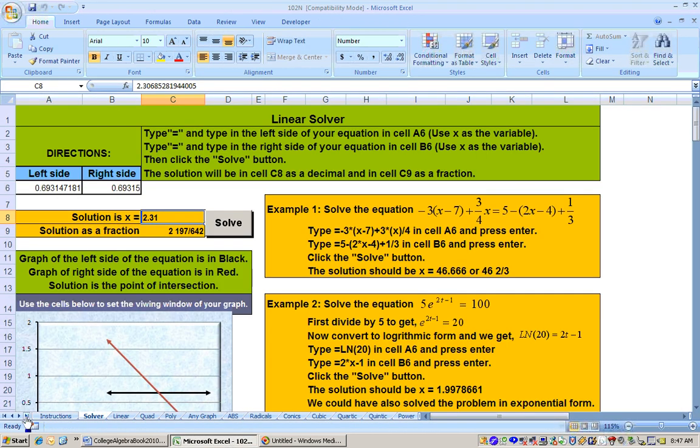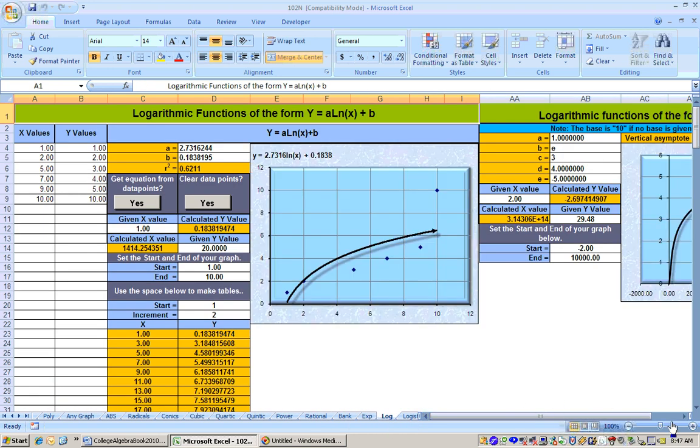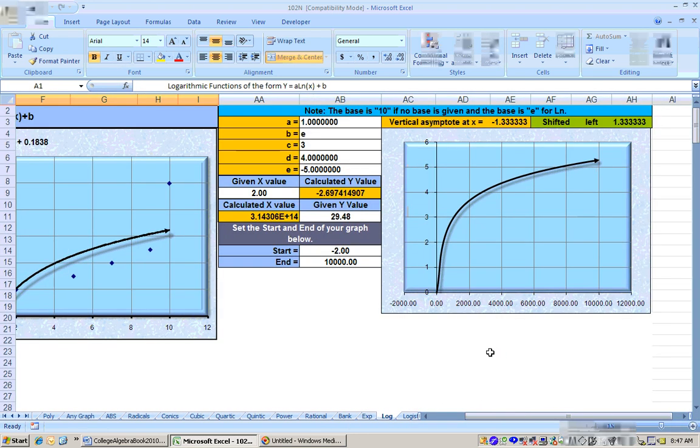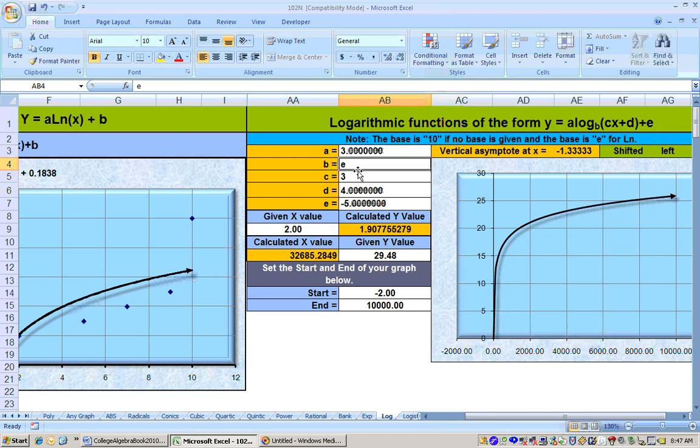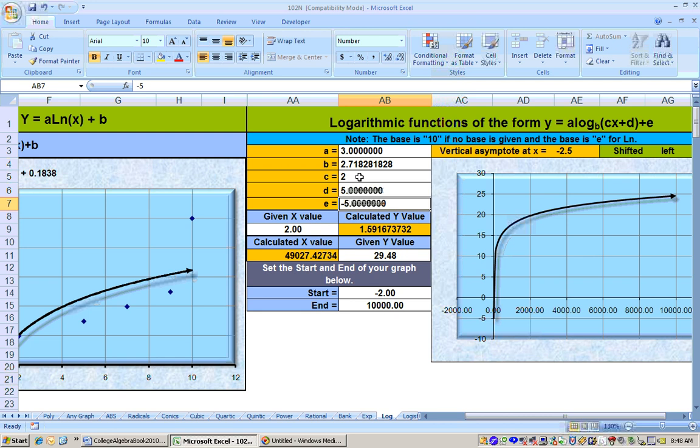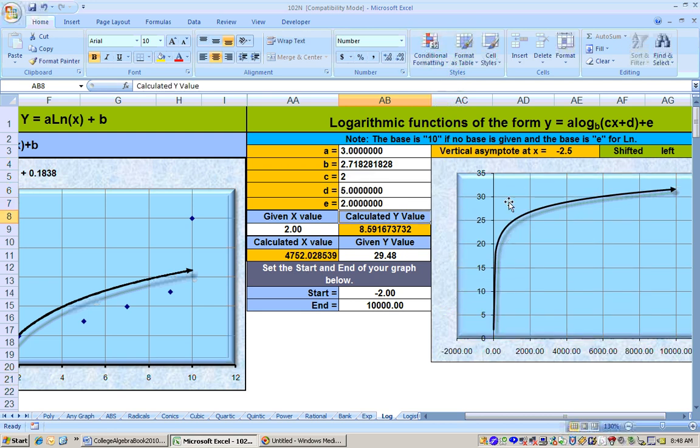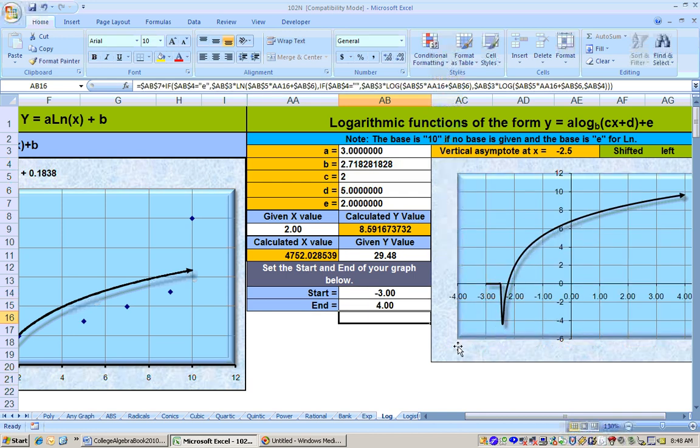You could always graph it on the logarithmic sheet up in this area. On the right-hand side of the sheet is where you could graph it. And we would be putting in, to this problem, the a is 3. The b, the base, would be e. And we could leave the e there or do equals exp 1 for e. And it'll put that number in there for us. The c is 2. The d is 5. And the e was 2. And there's the graph. Where's the vertical asymptote at negative 2.5? And we could graph this thing from negative 3 to 4 or so, just real low values. And you can see that here's where the vertical asymptote is.